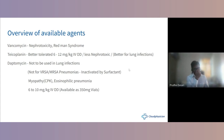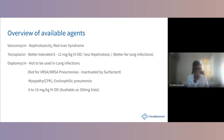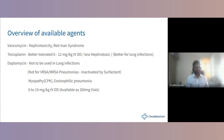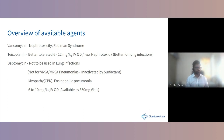Vancomycin: commonly used for line-related infections and meningitis. Meningitis dose is slightly higher; standard dose is 1 gram twice daily with renal adjustment. Red man syndrome is a described adverse effect. Teicoplanin is less nephrotoxic than vancomycin, better tolerated, dosed at 6–12 mg/kg IV once daily, and is a better drug for lung infections.